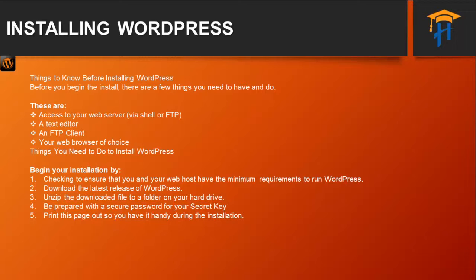Before you begin to install, there are a few things you need to have: access to your web server via shell or FTP, a text editor and an FTP client, and your web browser of your choice. Things you need to do to install WordPress: begin your installation by checking to ensure that you and your web host have the minimum requirements to run WordPress. Download the latest release of WordPress from the wordpress.org website. Unzip the downloaded file to your folder on your hard drive. Be prepared with a secured password for your secret key. If required, you can print out the information provided on this page and keep it handy during the installation so that you can refer to it easily.